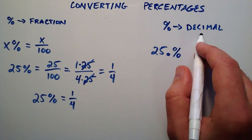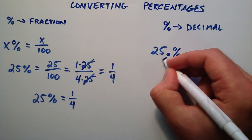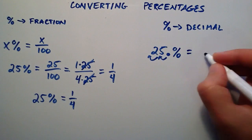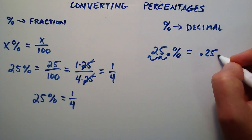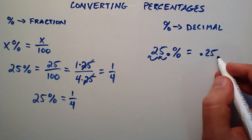So to convert it into a decimal, we simply take that decimal point and move it two units to the left. So 1, 2 puts it in front of the 2. And so we moved it two units to the left, and then we get rid of the percent sign. So 25 percent can be rewritten as a decimal point 25.